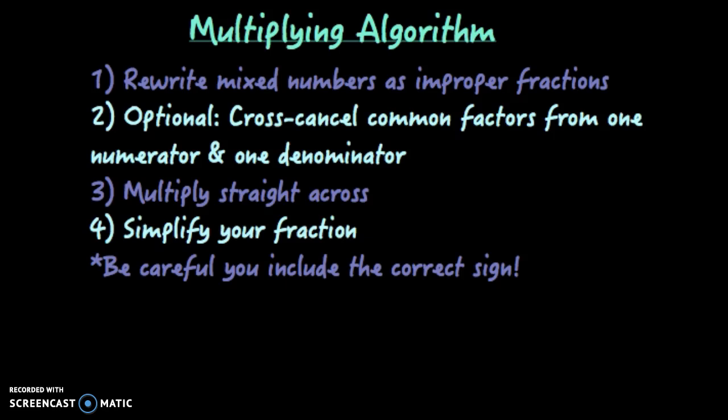The third thing, you're going to multiply straight across, and then you'll simplify your fraction. Do be careful that you look for the correct sign and make sure if it's positive or negative that you include the correct one.